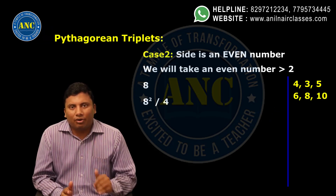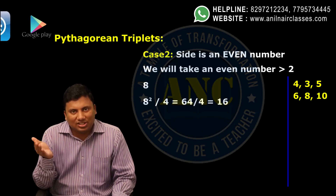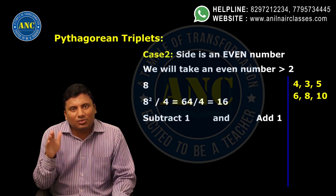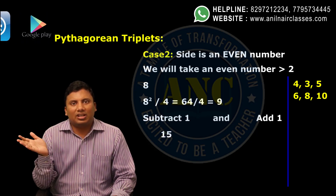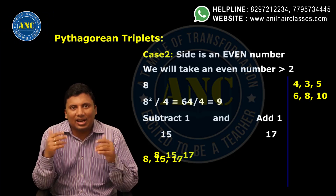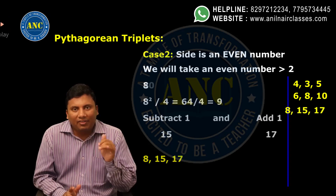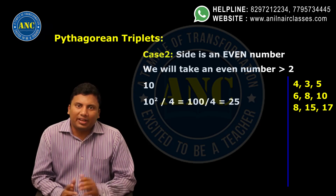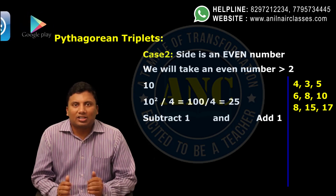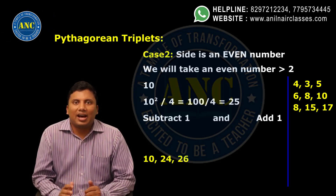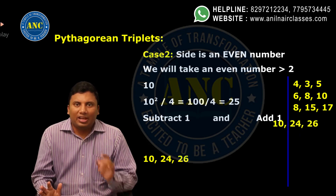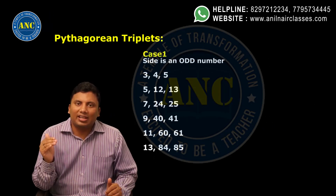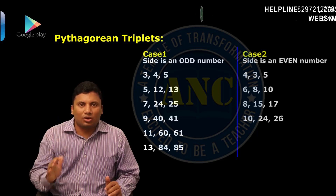For 8: 8 squared by 4 is 64 by 4, which is 16. Subtract 1 gives 15, add 1 gives 17 — so 8, 15, 17 is another Pythagorean triplet. For 10: 10 squared by 4 is 100 by 4, which is 25. Subtract 1 and add 1 — giving 10, 24, 26. If the side is an odd number, use Case 1 logic; if the side is an even number, use Case 2 logic. I hope this concept is clear.